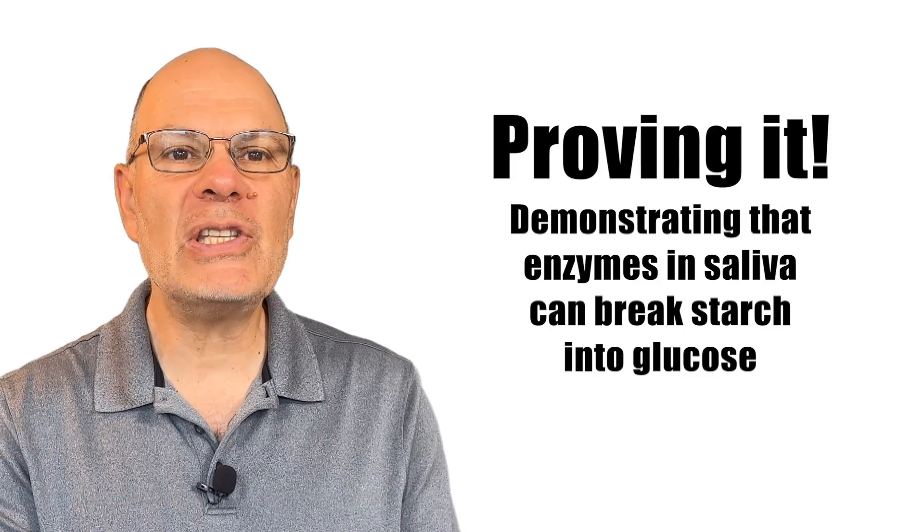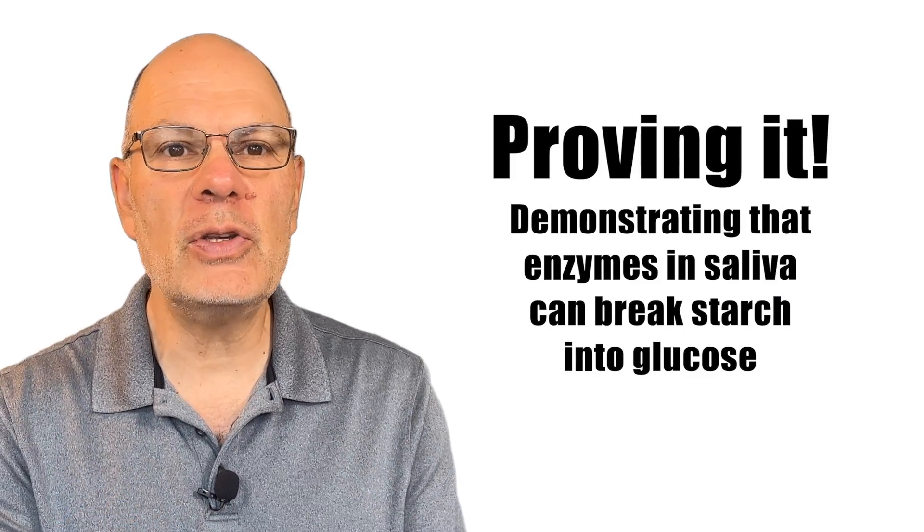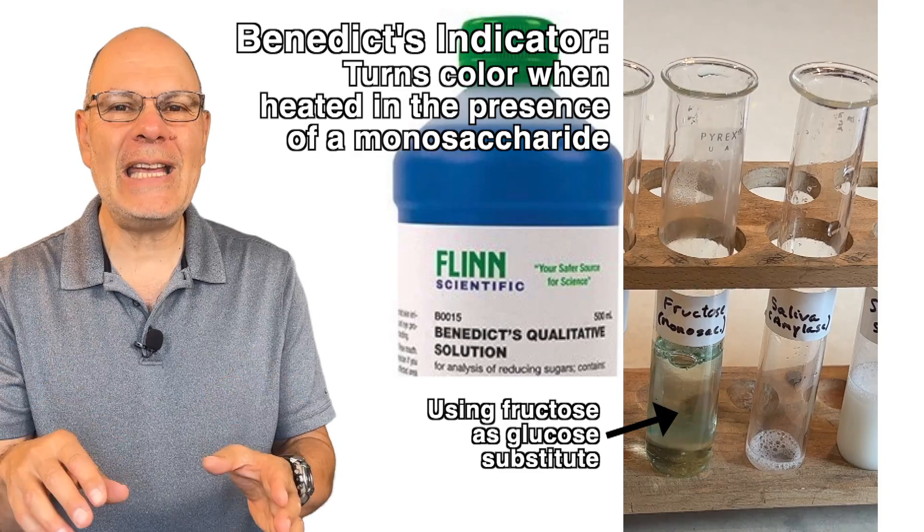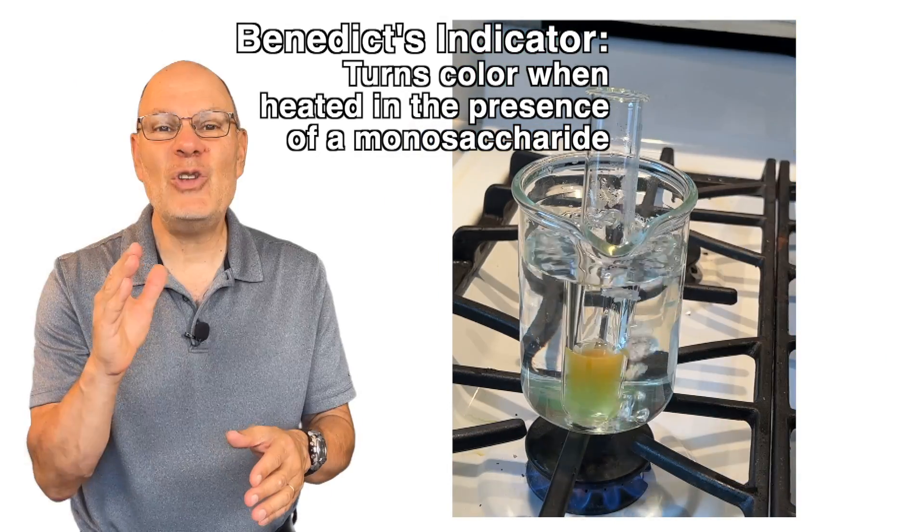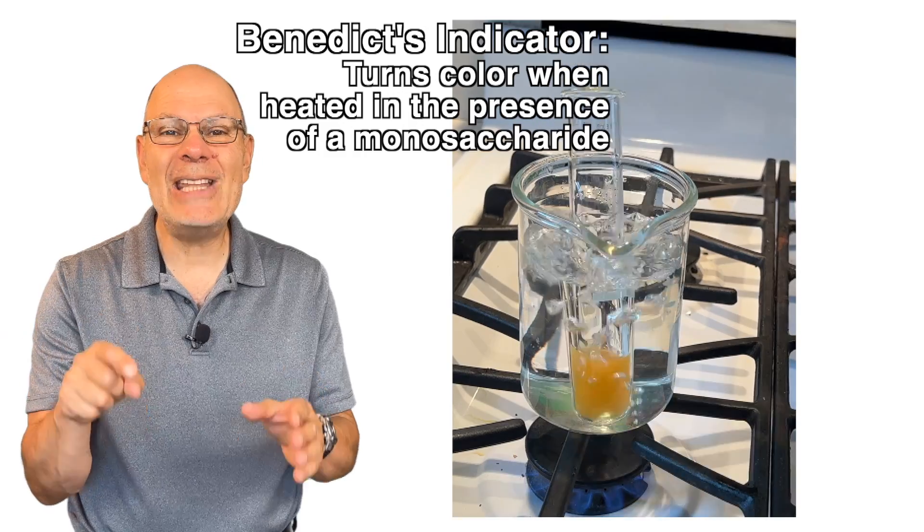You can test for the presence of monosaccharides like glucose by adding Benedict's indicator to a monosaccharide solution and then heating it. If you see a color change, that indicates the presence of a monosaccharide.